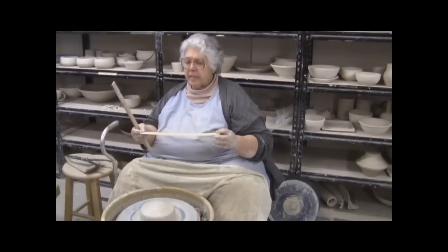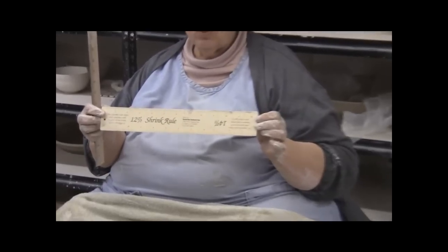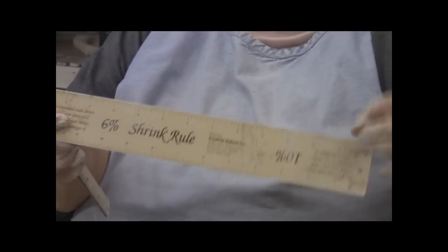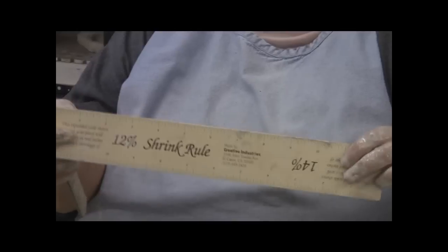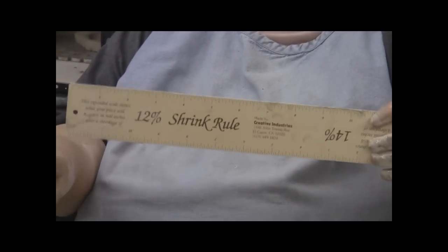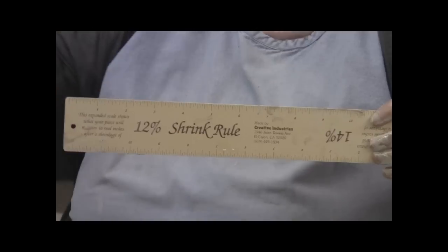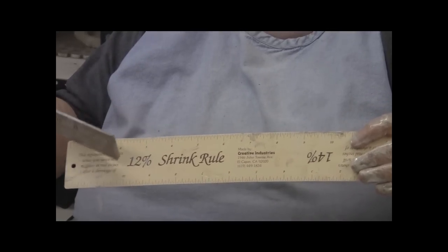What the shrink ruler is, it's a ruler whose measurement is expanded by a certain percentage. There's actually four percentages on here: six, ten, twelve, and fourteen. Standard wet clay will shrink approximately twelve percent from out of the bag to the finished product that you're taking home. So we're going to use the twelve percent scale today.